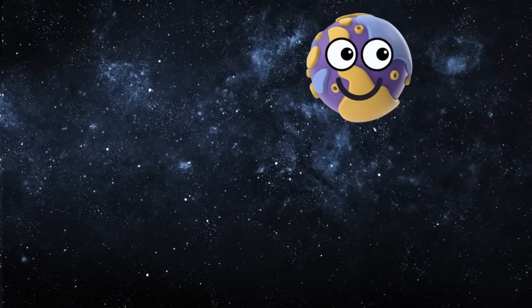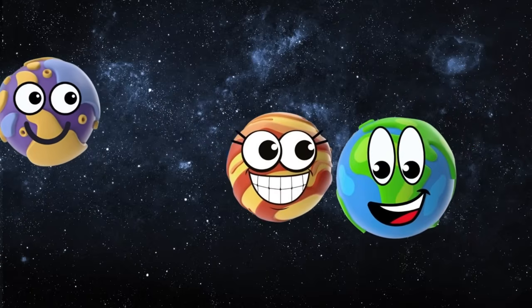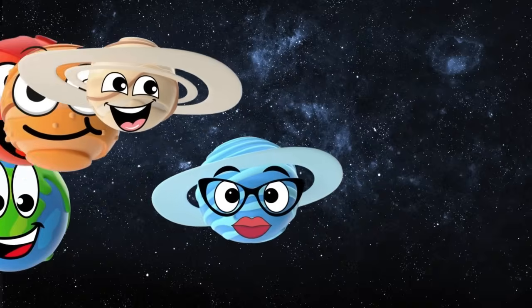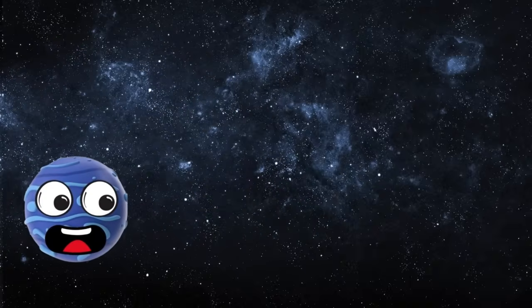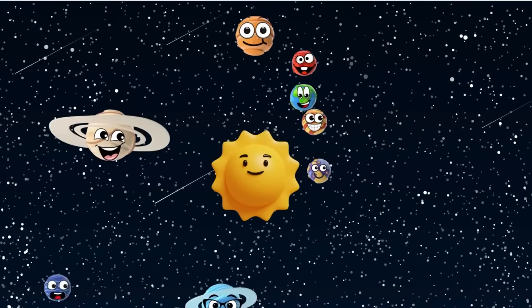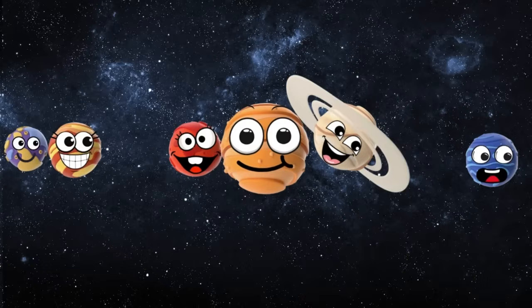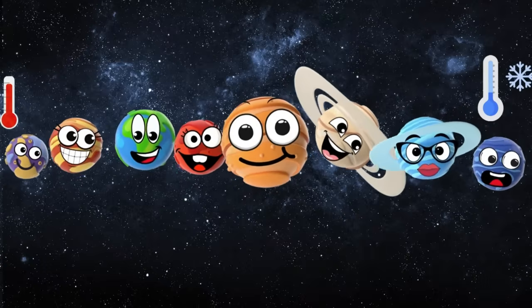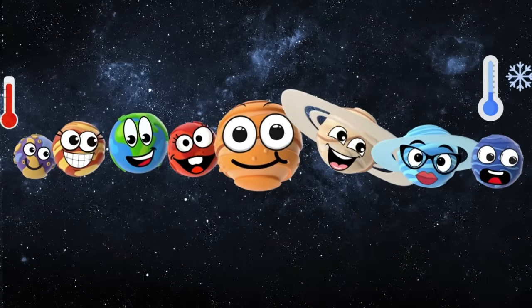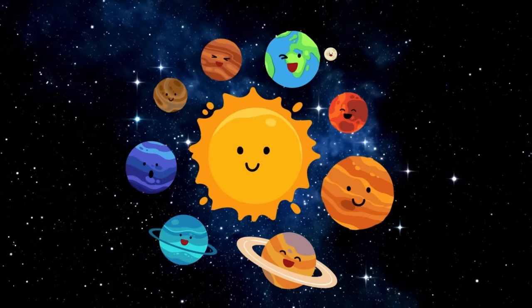Mercury, Venus, Earth and Mars, Jupiter, Saturn, Uranus and Neptune, the last. Around the sun we spin and play, eight cool planets on display. From the hot to freezing cold, the solar system's bright and bold.